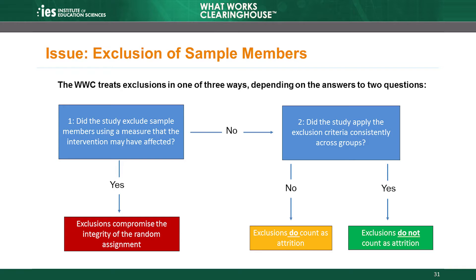Depending on the answer to these two questions, the WWC treats the exclusions one of three ways. The first question asks whether the study excluded sample members using a measure that the intervention may have affected. If so, this could compromise the integrity of the random assignment. The second question asks whether the study applied the exclusion criteria consistently across groups. The WWC is concerned about exclusions that could favor one group over the other and may count the exclusions as attrition.